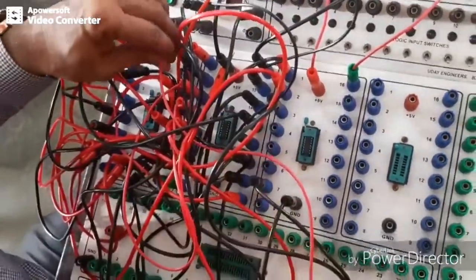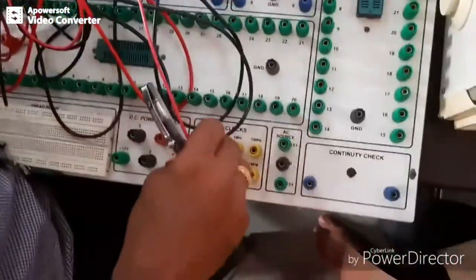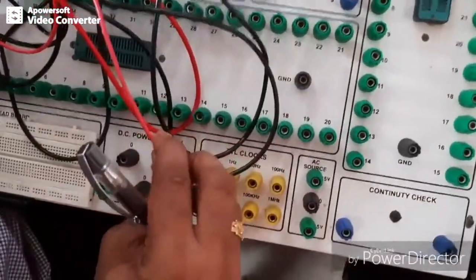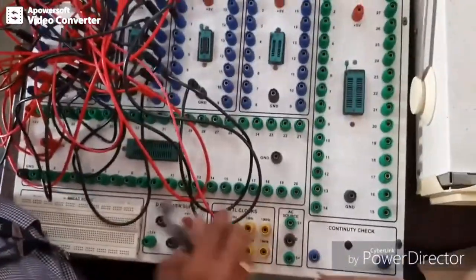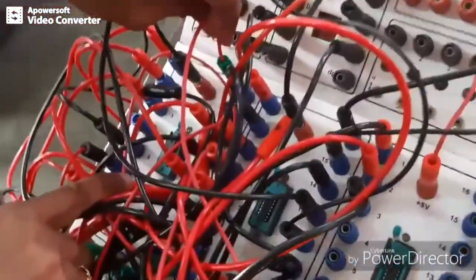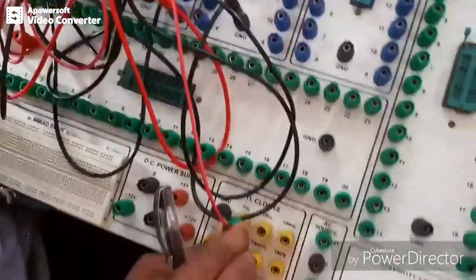So when you make the connection like this, you have to give the input by using clock signal. This is pin number 14 connected to clock. Pin number 14 of 7490 decade counter IC is connected to clock signal.